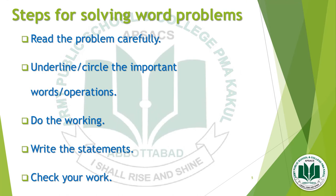There are five steps for solving word problems. Number one: read the problem carefully. Number two: underline or circle the important words or operations — operations meaning plus or minus. Number three: do the working. Number four: write the statements. Number five: check your work. I will now explain these steps by solving an example.